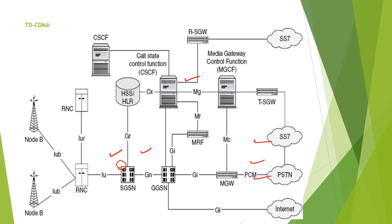The Home Location Register is connected to the Call State Control Function for whoever is trying to call at that particular moment, which connects through the radio interface to the Media Gateway Control Function (MGCF), which connects through the time division duplexing gateway to the communication network via Signaling System 7 to the Public Switch Telephone Network. The HLR connects to CSCF through the CX interface, CSCF connects to MGCF through the MG interface, and MRF — the Media Resource Function — is connected via the MR interface from CSCF.